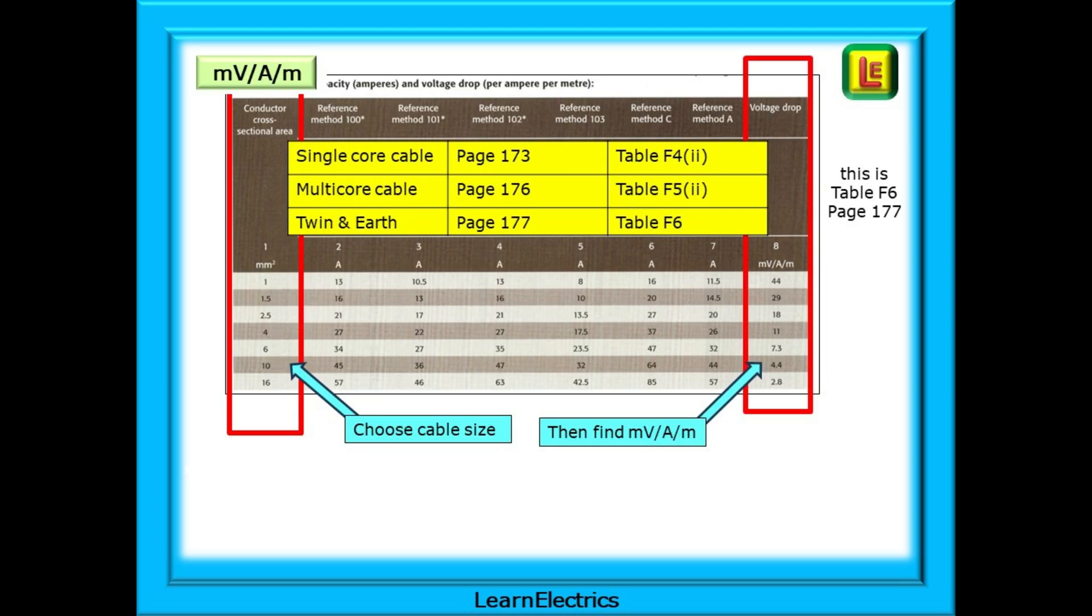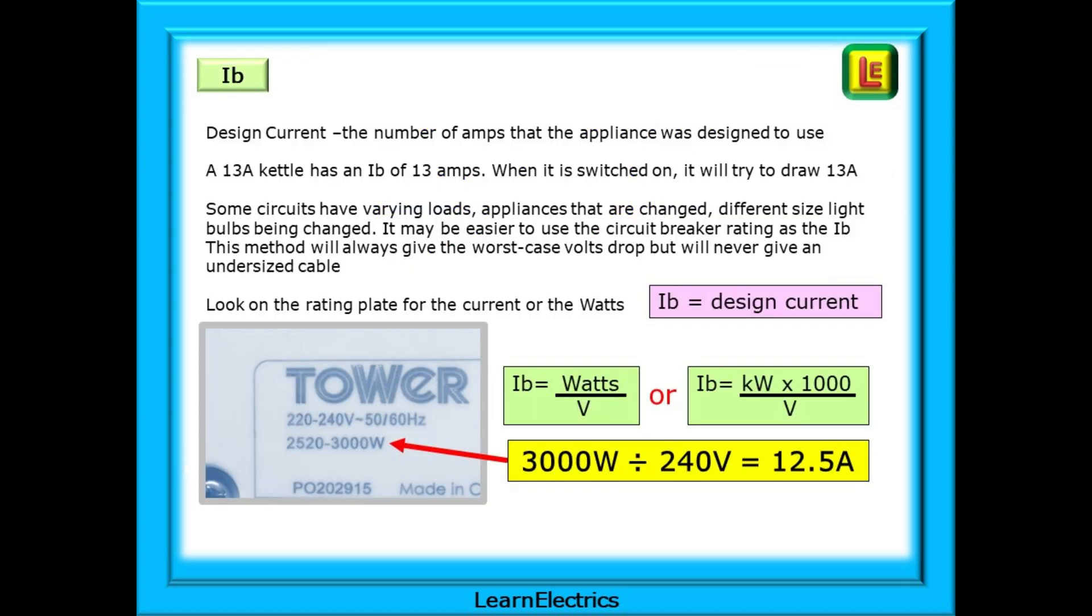The millivolts per amp per meter is a number specific to a certain size of conductor. Take a look at table F6 on page 177 and see the numbers in the rightmost column. The bigger the cable size, the less millivolts that are lost in the cable. We simply choose a cable size on the left and then look up the MVAM number on the right.